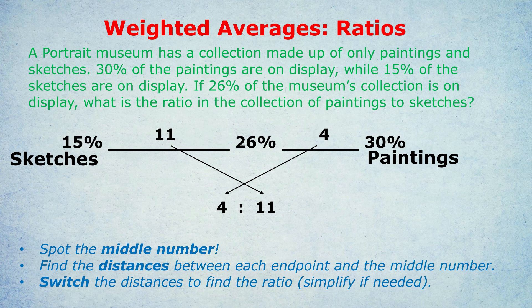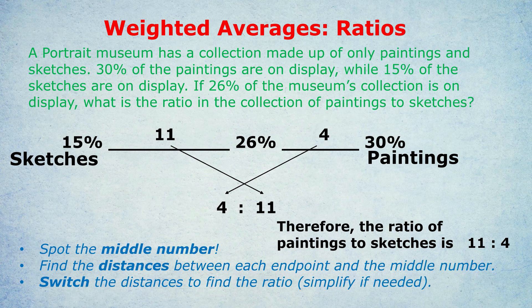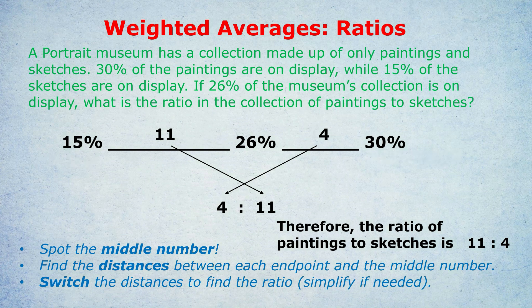The much bigger number belongs with 30%, because the average is much closer to 30%. In summary, we now have a ratio between the amount of sketches — that's 4 — to the amount of paintings — that's 11. There are far more paintings than there are sketches. Notice the question asks for the ratio of paintings to sketches, so that's 11 to 4, not 4 to 11. The left-hand side, the 15%, is sketches. The right-hand side, the 30%, is paintings. Now, that's great for ratio questions, but what happens if they want a fraction? Time for my next amazing example. If you want, you can pause the video and try this one yourself. The trick is so effective that you might be able to do it just with that first example.